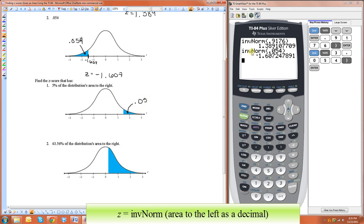Well, the way the invNorm function works is you have to tell it the area to the left. So all we need to do is just do 1 minus 0.05. So this is 0.95.